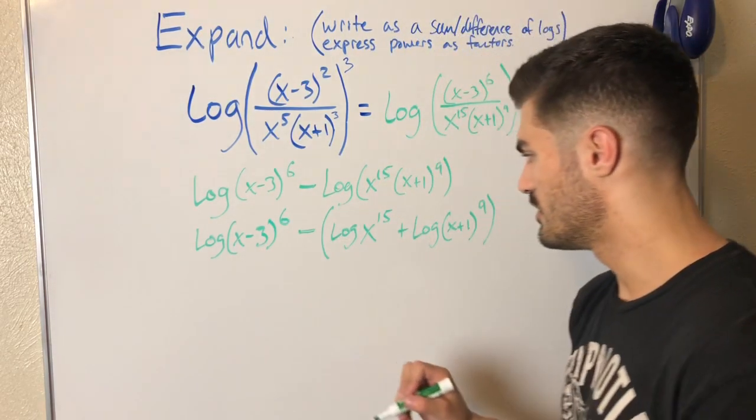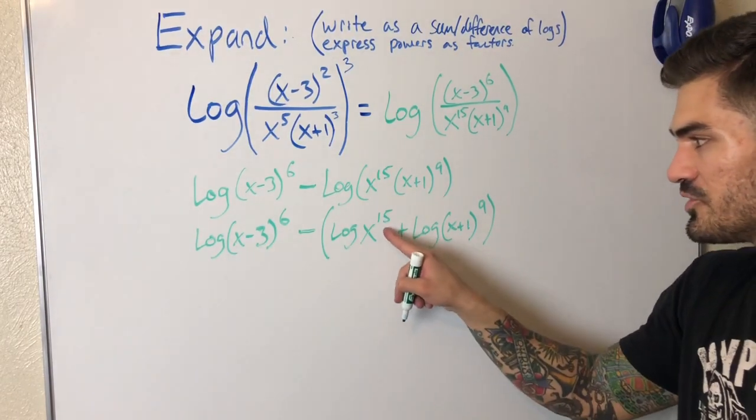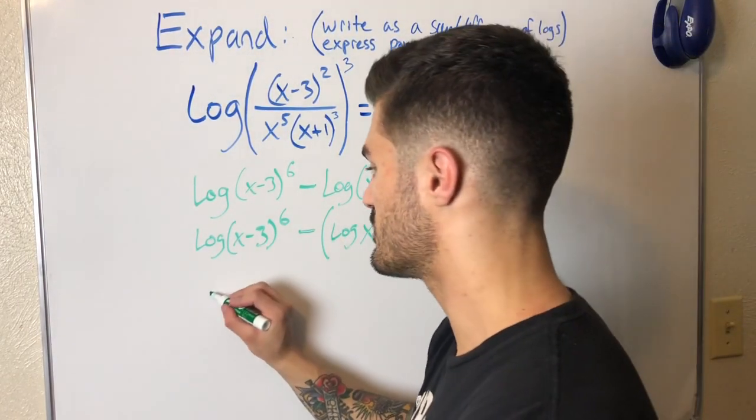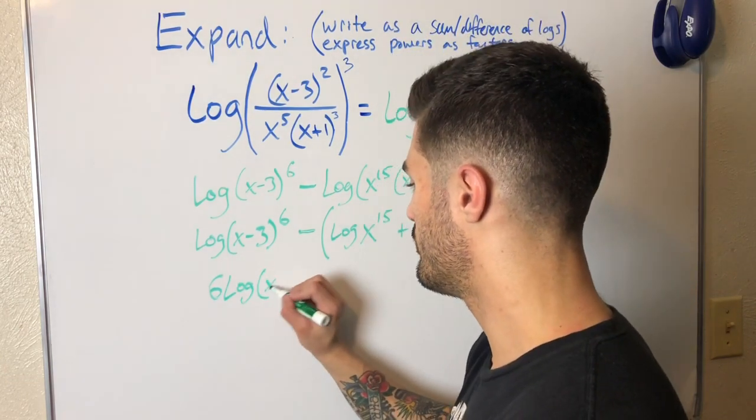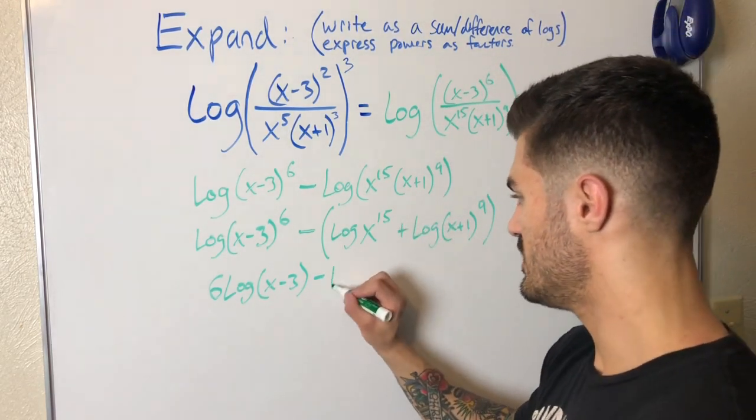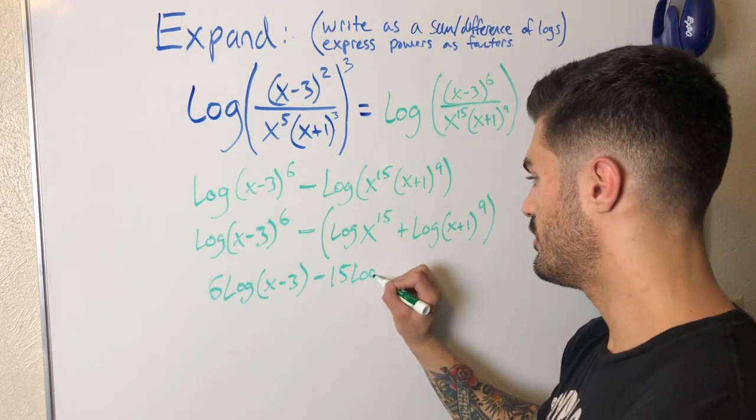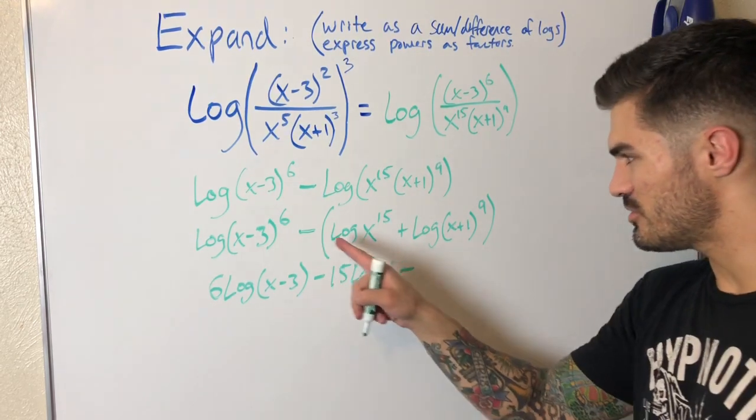And I'm going to go ahead and actually—well, I'll do that all in the next step because that'll be the last thing to do is bring all the powers down. So now I'll get rid of these parentheses and distribute this negative as well as bring the powers out in front as factors. And that will be my final expanded logarithmic expression. Struggled saying that word for some reason there. 15 is out in front, log x, but again, minus that distributes, nine log x plus one.